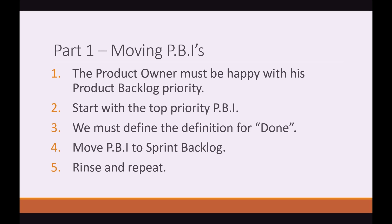In Part 1 — Moving PBIs — the Product Owner must be happy with his Product Backlog priority. That means all the PBIs in the current backlog need to be in an order that suits the Product Owner and the business. Usually, this is already done and refined in a Product Backlog Refinement Meeting. The Product Owner identifies the top priority item, then the Dev Team and the Product Owner need to understand the definition of done for that PBI. Once that's defined, we can move the Product Backlog Item to the Sprint Backlog. We rinse and repeat this process until we have filled our capacity for the Sprint.